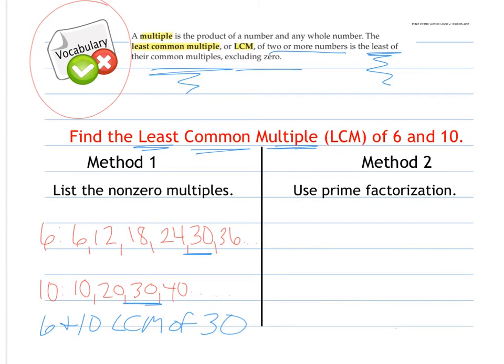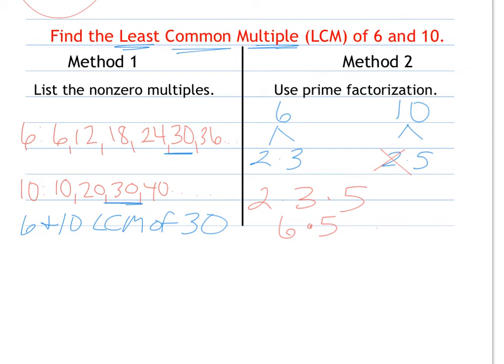Another method is to use prime factorization. So I could find 6, prime factors are 2 and 3. For 10, prime factors are 2 and 5. What I do is I find the least product that contains the prime factors of each number. So I see a 2, a 3, and since that 2 repeats there, I don't include it, but I do include the 5. So it's 2 times 3 times 5, which is 6 times 5, which is 30. Notice both ways I find a least common multiple of 30.